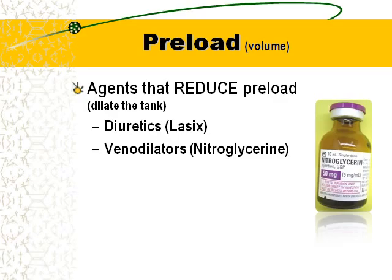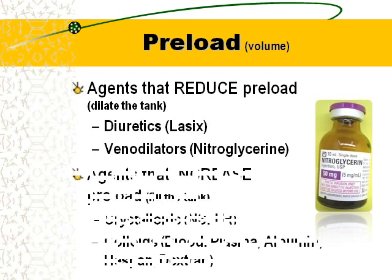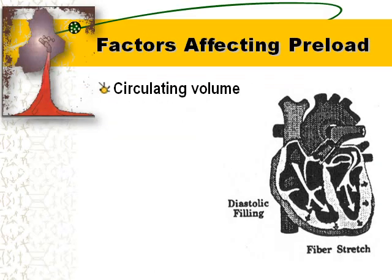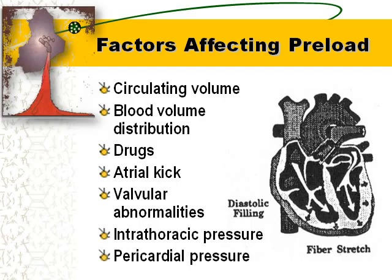What are some agents that reduce preload or dilate out the tank? Lasix or furosemide, and venodilators like nitroglycerin expand the tank size, reducing preload and lowering the CVP number. Agents that increase preload or fill the tank include crystalloids like normal saline and lactated Ringer's, and also colloids. These affect our diastolic filling.